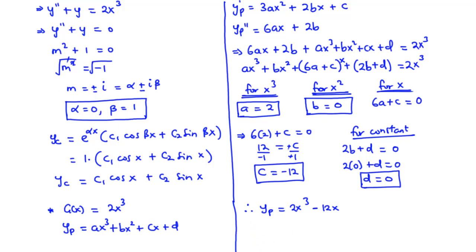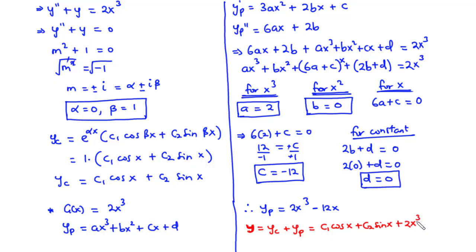The general solution is y = yc + yp = c₁cos x + c₂sin x + 2x³ − 12x. This is the general solution to the given differential equation. That's it for today's video — thanks for watching, and see you in my next video. Bye-bye.